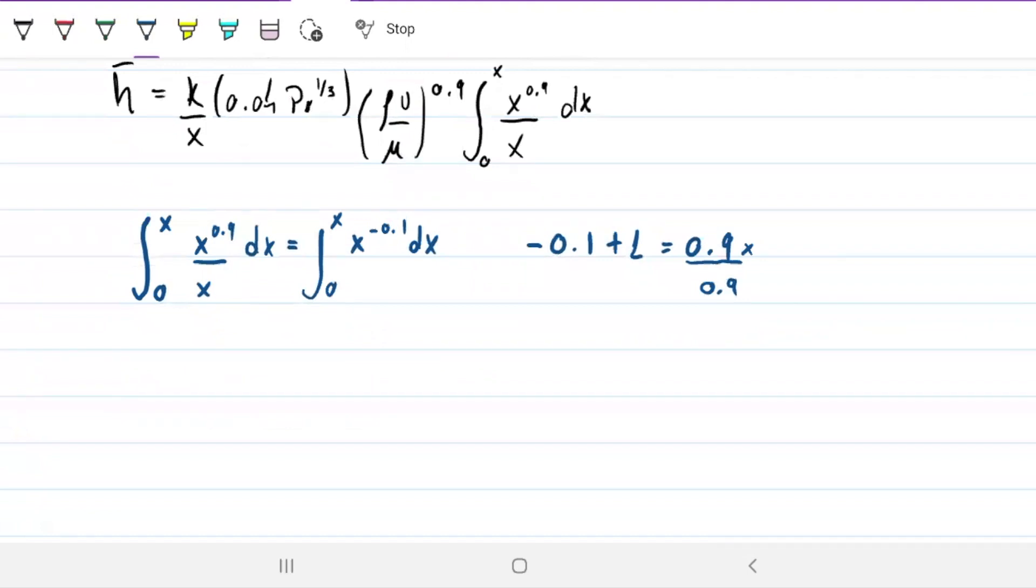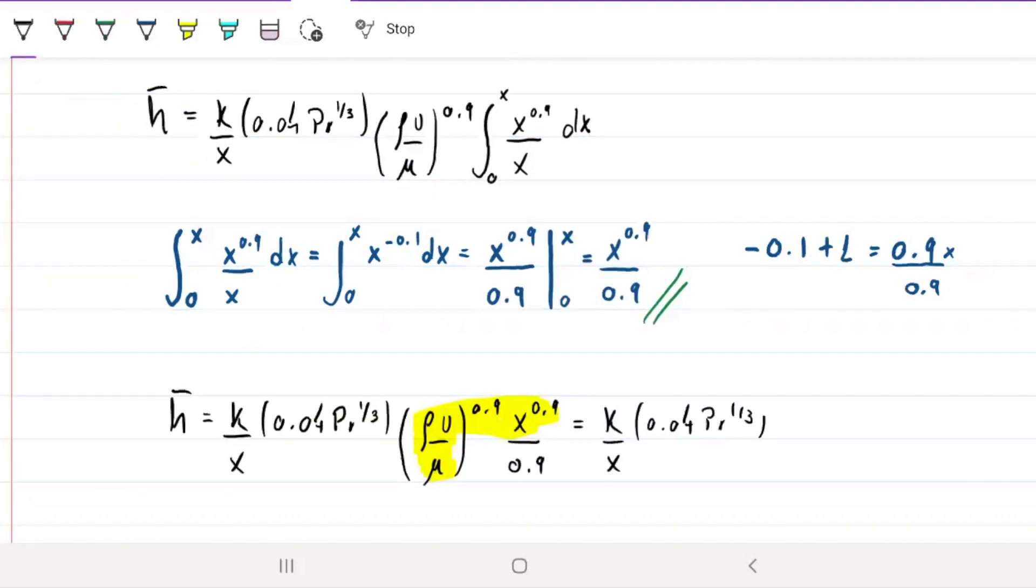So we know how to solve that integral. So that would be, so that means that this equals x^0.9 over 0.9 as you go from 0 to x. Obviously, whatever is 0 goes away. So this is the same thing as just x^0.9 over 0.9.